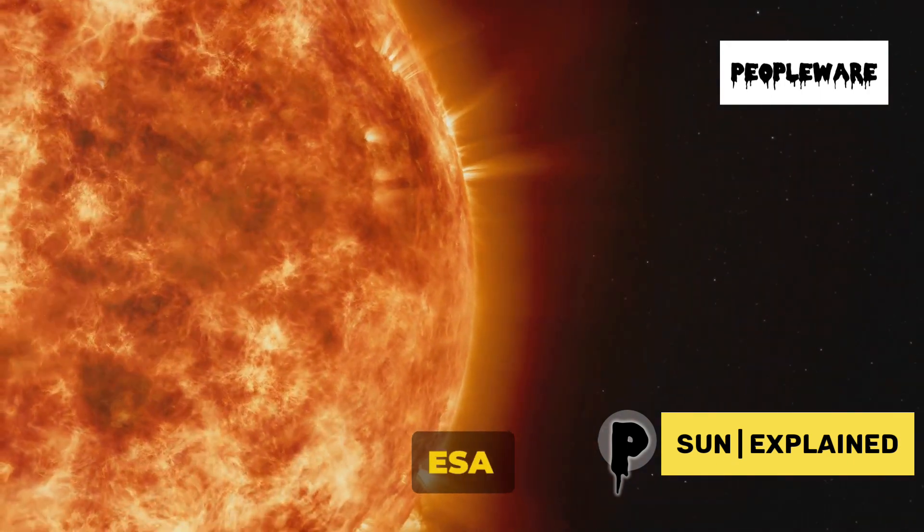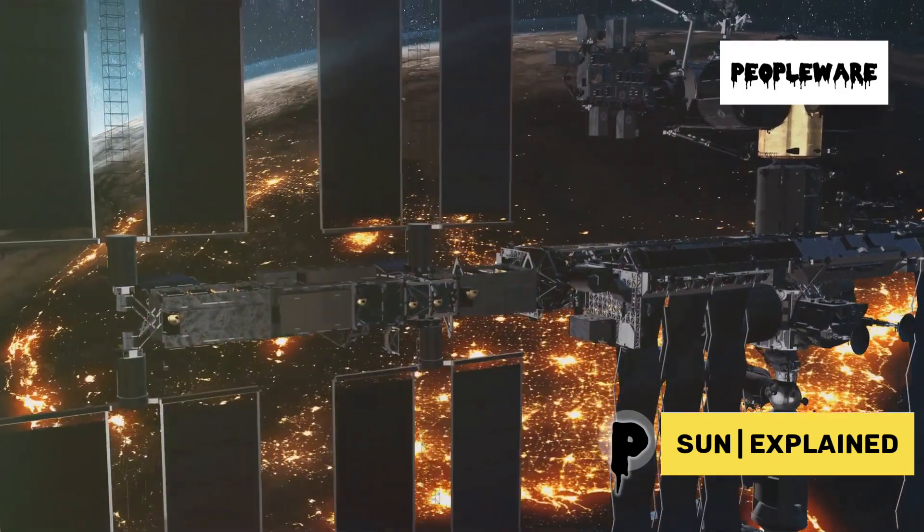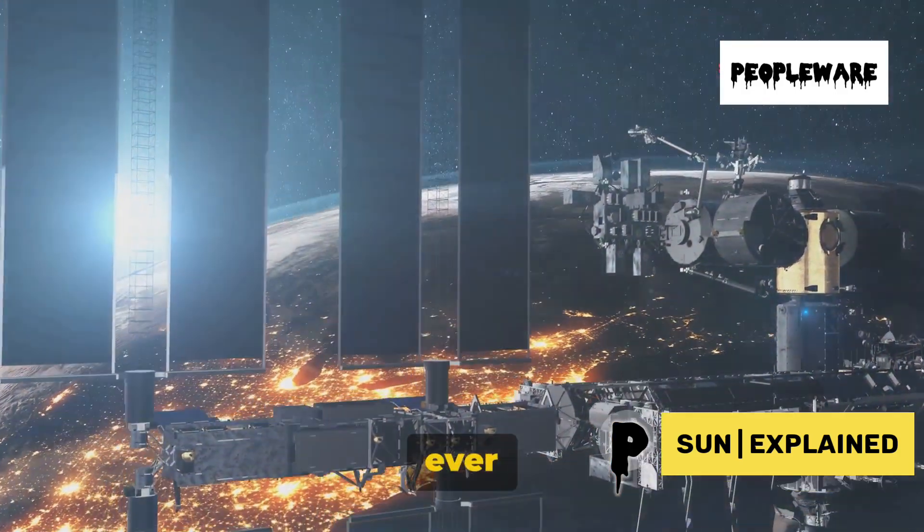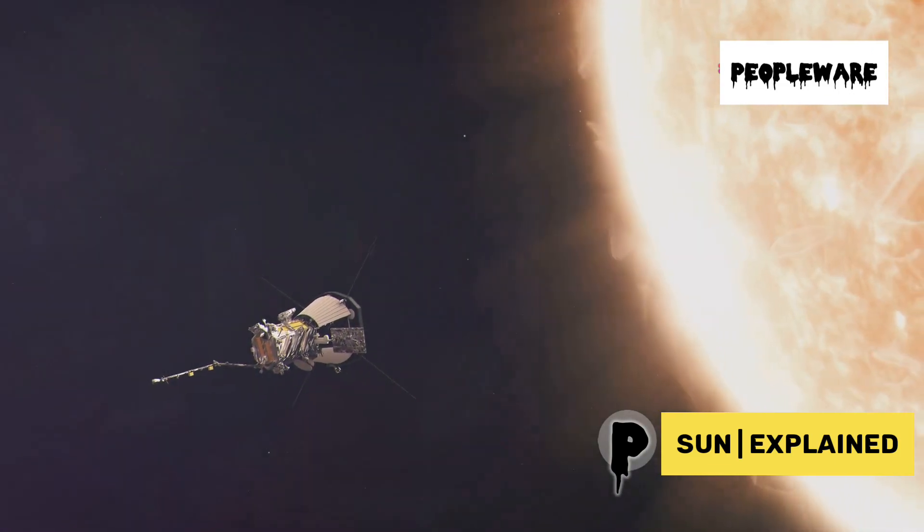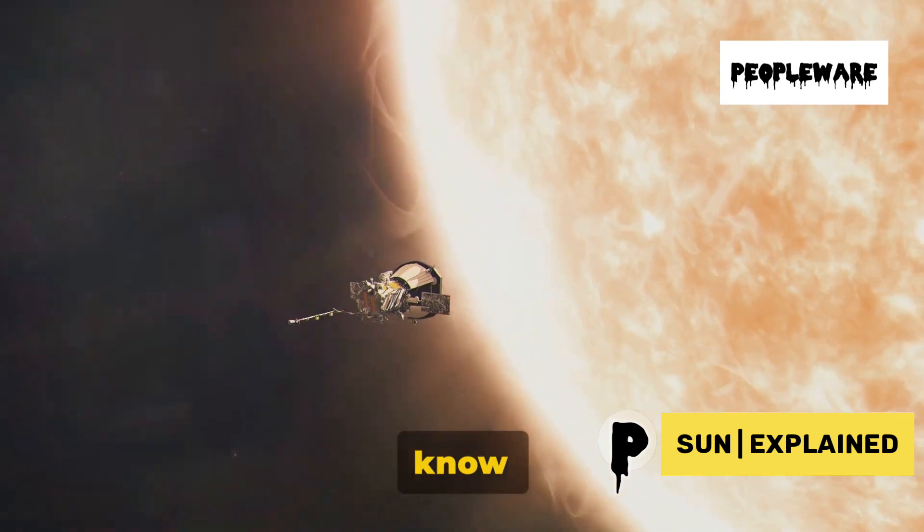Across the pond, the ESA, in partnership with NASA, launched their Solar Orbiter. This spacecraft is on a unique mission, designed to take the closest ever images of the Sun's surface. It's also the first to provide images of the Sun's poles, a region we know little about.